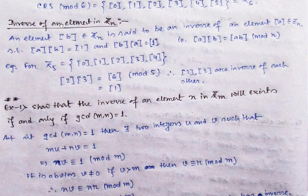Next we go to another thing — that is the inverse of an element in Z_N. Suppose we have a complete residue class, which is Z_N. Z_N means when we divide by N, the remainder ranges from 0 up to N minus 1, so we get classes 0, 1, up to N minus 1.